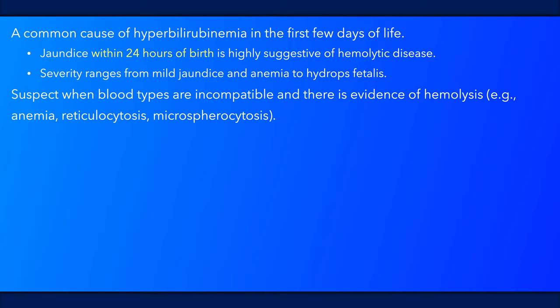Initial evaluation in a stable newborn typically includes a combination of blood type and RH status, complete blood count, reticulocyte count, direct or indirect antiglobulin test — that is, Coombs test — a peripheral blood smear, and/or a G6PD assay.